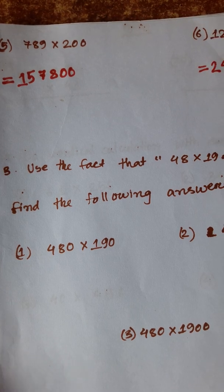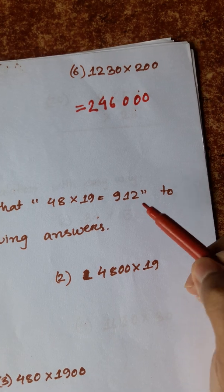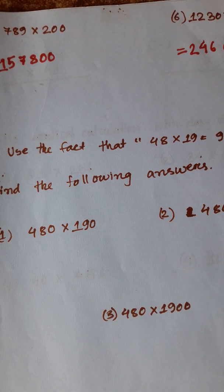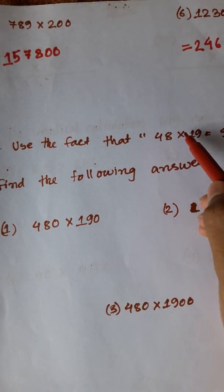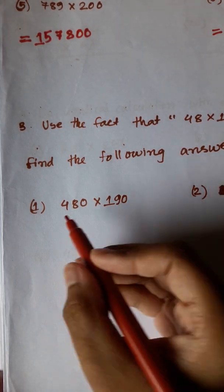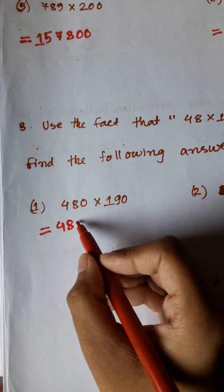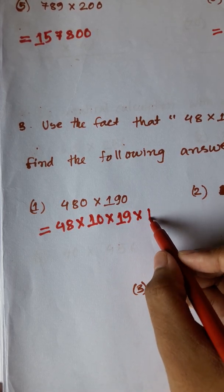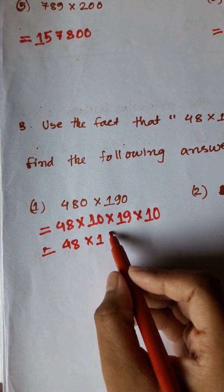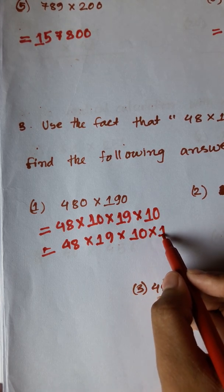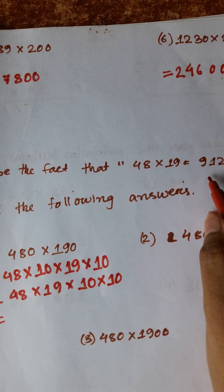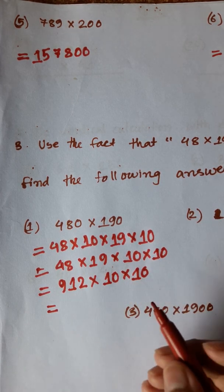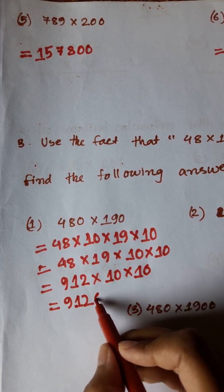এখন number করবো — 3 number, যেটা most important। যেদা পাশে দেব: 48 into 19 is equal to 912. আমাদের এই number-টাকে কোনোভাবে 48 into 19 করে ভাগ করতে হবে। So আমাদের কড়ি: 48 into 10 into 19 into 10. Then 48 into 19 into 10 into 10. Question-এ দেওয়া আছে 48 into 19 into 912. So 912 into 10 into 10. Therefore answer is 912. Is zero-তে অপূর্ব হবে।